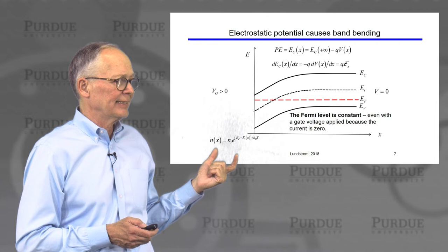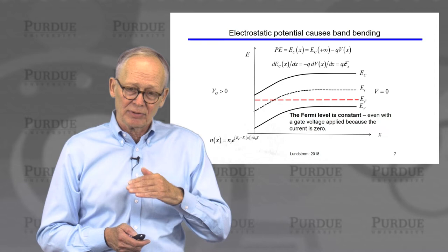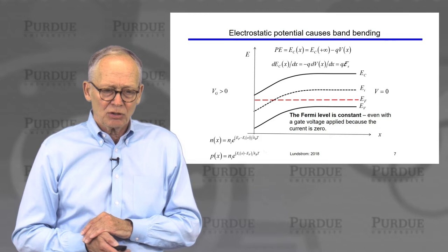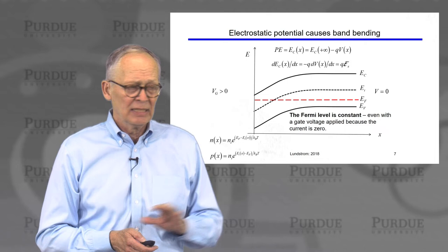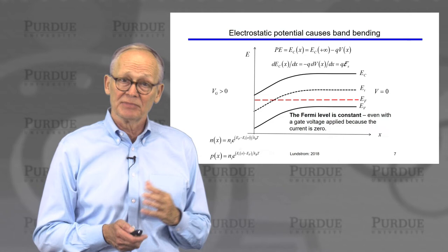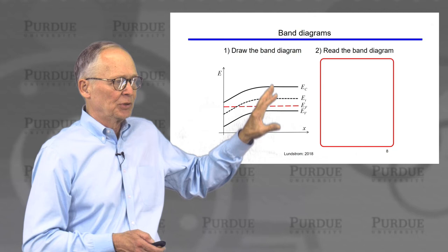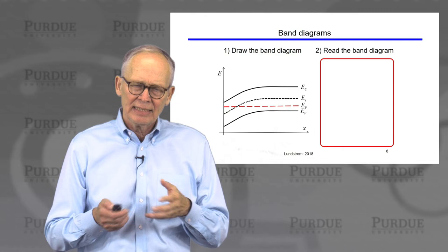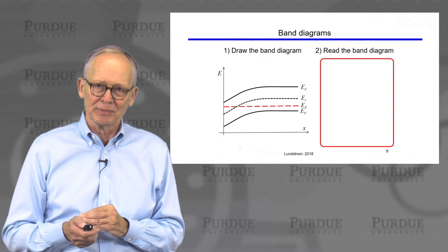We also know that the electron density is related to the distance between the Fermi level and the intrinsic level. If the Fermi level is above the intrinsic level, we have a lot of electrons. If the Fermi level is below the intrinsic level, we have a lot of holes and fewer electrons. The hole concentration is related in the opposite way — the further below the intrinsic level the Fermi level is, the more holes we have. So we can look at a band diagram and see that there are a lot of holes in the bulk and many more electrons near the surface because the Fermi level is above the intrinsic level near the surface.